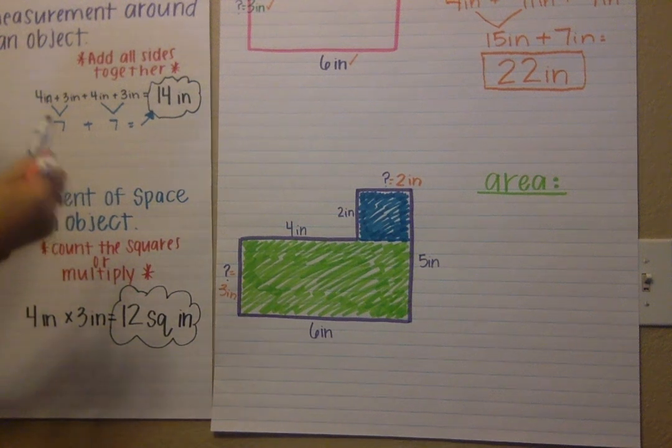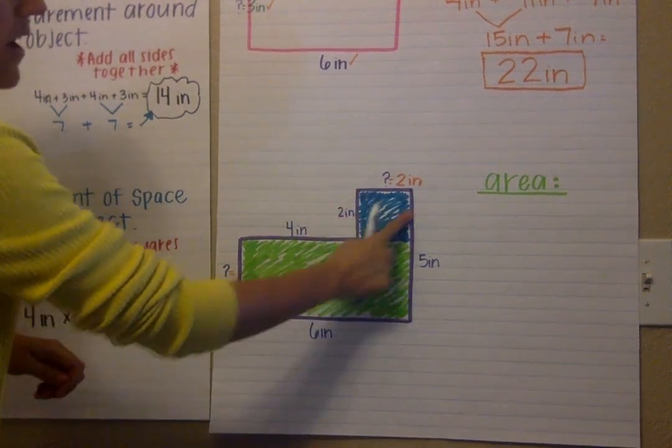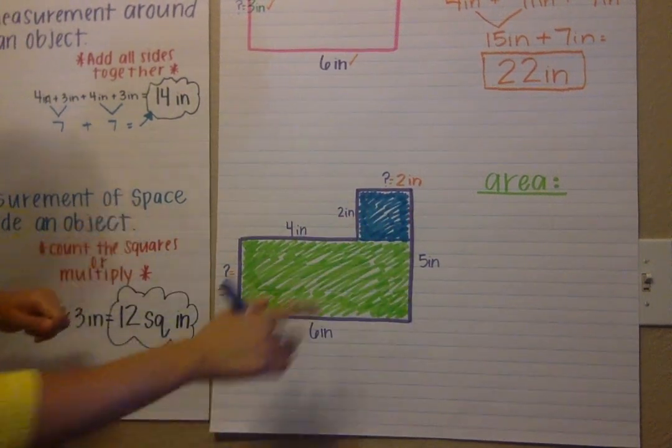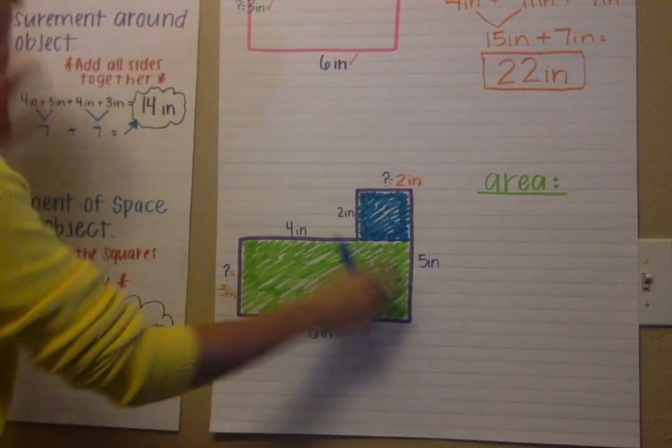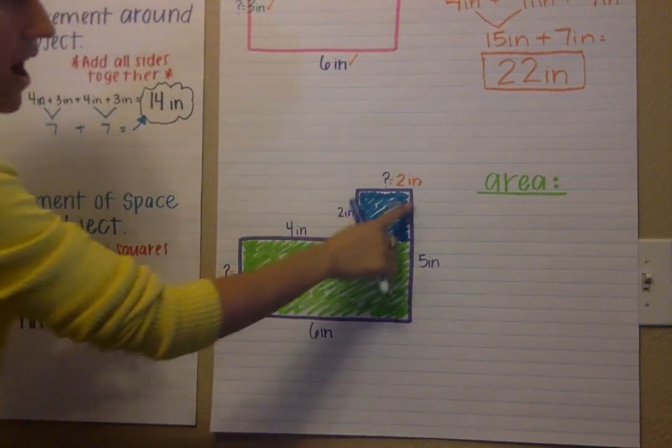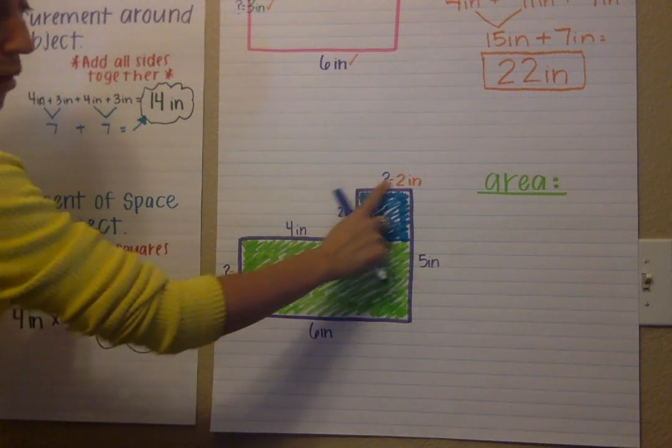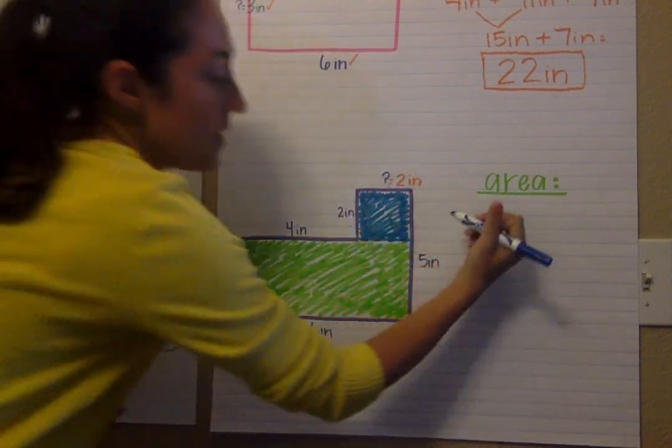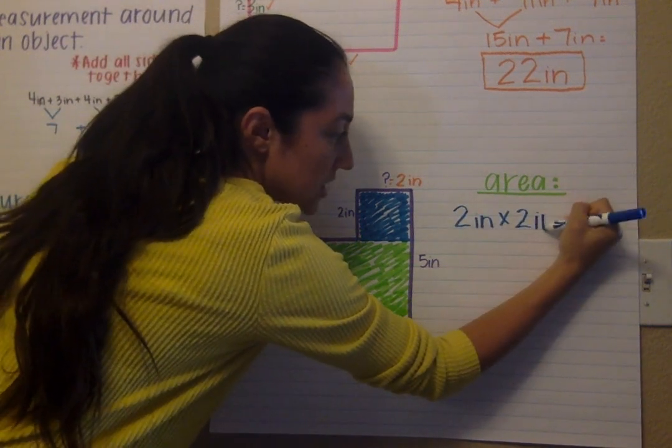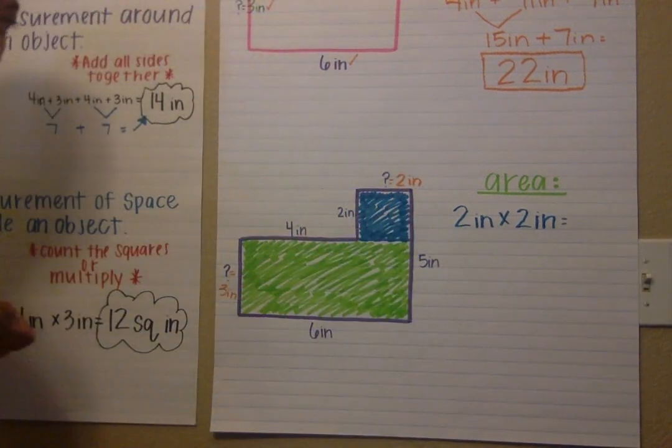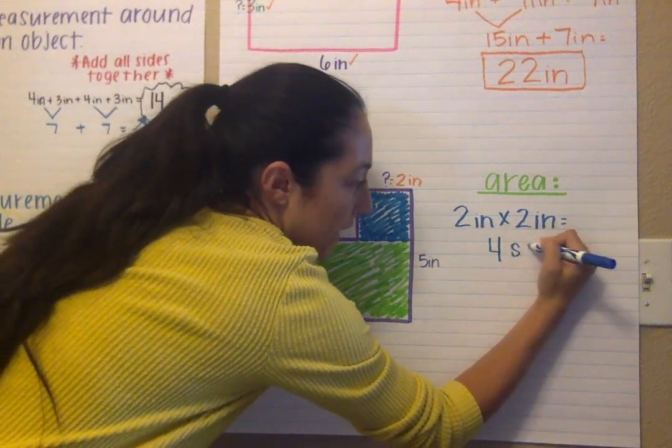And then we are going to now multiply. So in blue is going to be the area of this small one. So I'm going to take two times two. I don't multiply by five because five represents this entire line and that's not what we're multiplying by. We're only multiplying this smaller area. So that's going to be two inches times two inches, this number and this number. Two times two is equal to four square inches.